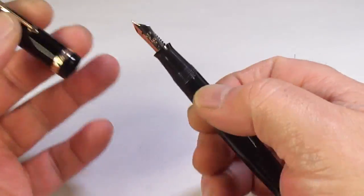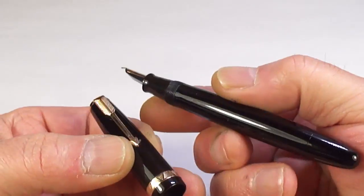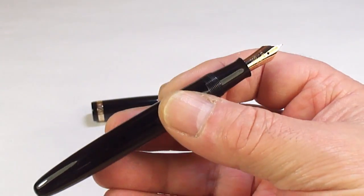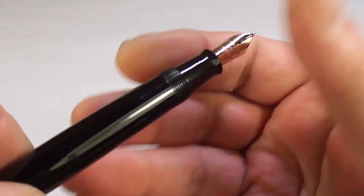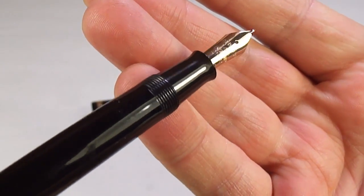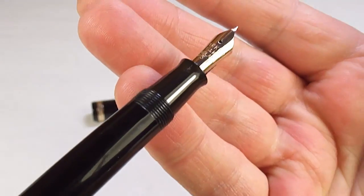Let's unscrew the cap for you. There's the pen in lovely condition. As always, everything internally has been cleaned, we've put a new sack in it. You can see the section there, it's got this quite a long section with a ridge towards the nib.